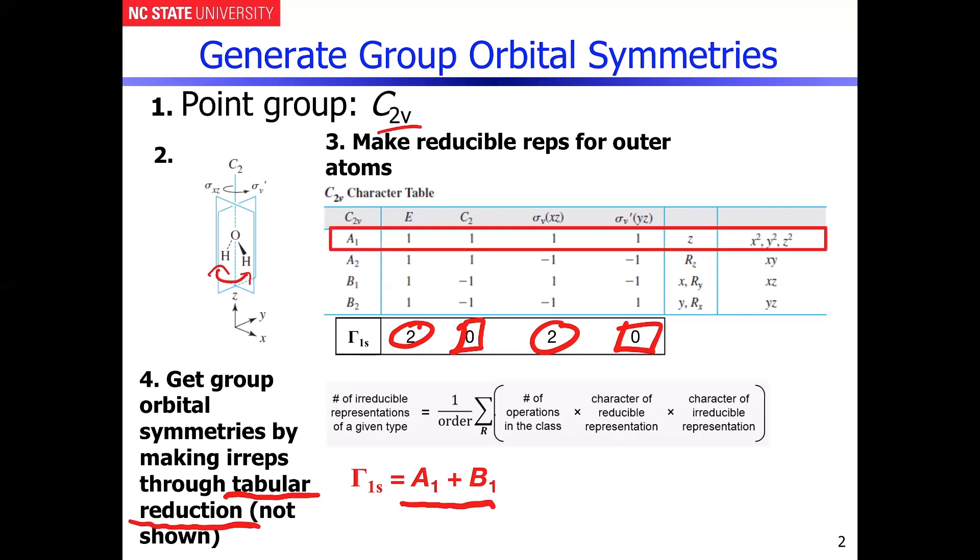Which of course A1 is totally symmetric. And then B1 as you can see there has the same symmetry as the X axis. So that will be convenient when we're looking at how to do this later.